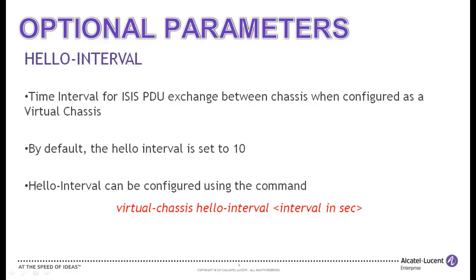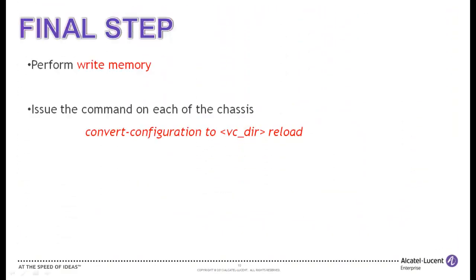HelloInterval provides the capability of controlling the ISIS PDU exchange between chassis when configured as a virtual chassis. By default, the hello interval value is set to 10. The hello interval can be configured using the command: virtual chassis hello interval, followed by the interval value in seconds. The final mandatory step is to perform a write memory and issue the command: convert configuration to the virtual chassis directory reload. However, the directory must contain a valid image file and the boot.cfg which holds the virtual chassis configuration.